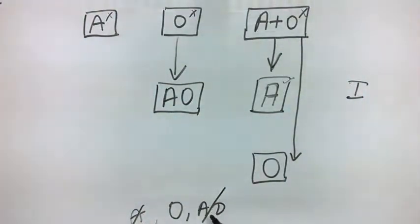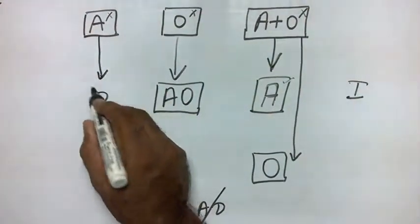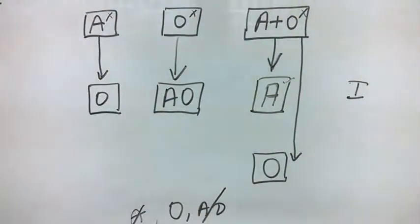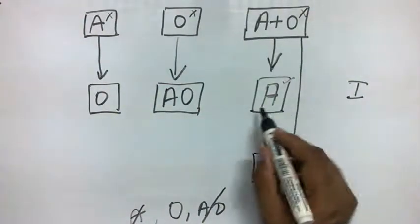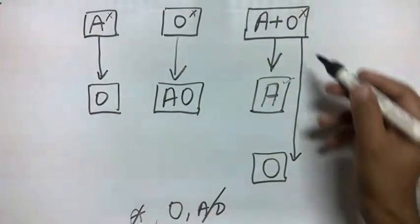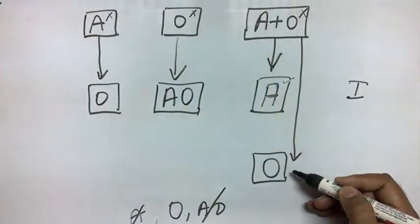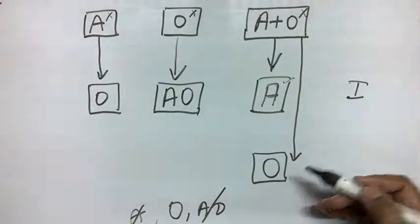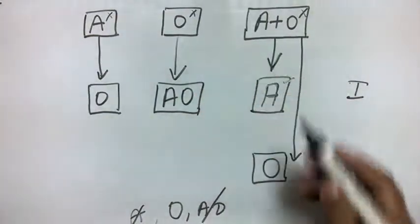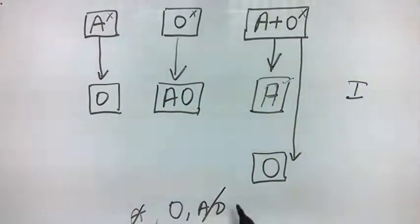In the second case, if we choose orange in this box, we again have three choices: apple, orange, and apple plus orange. One is eliminated, two are remaining.